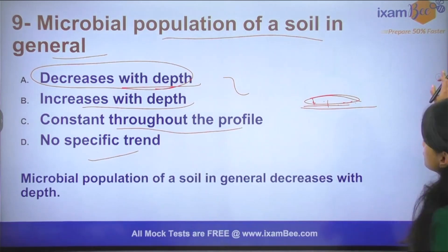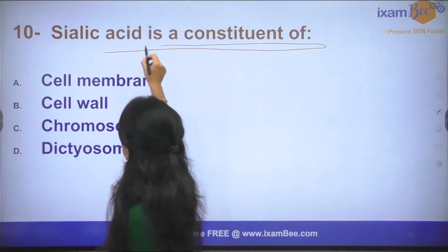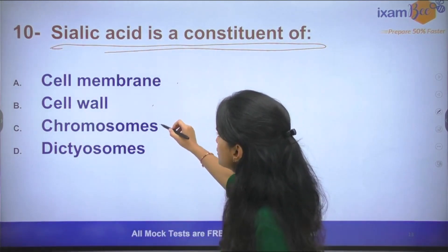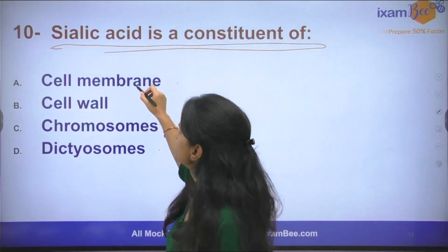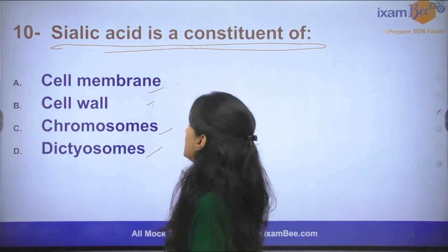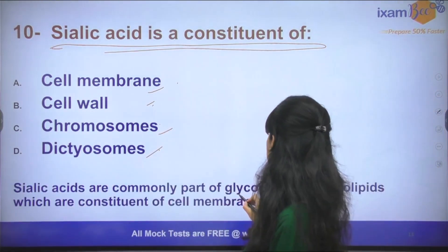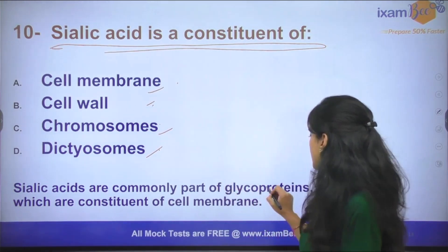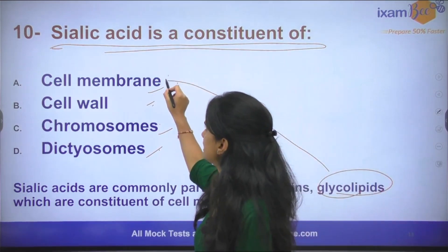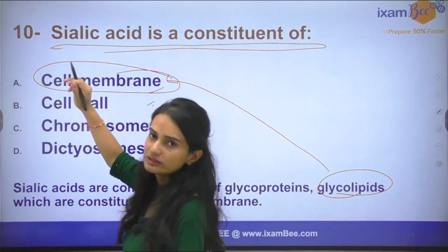The next question: Sialic acid is a constituent of which structure — cell membrane, cell wall, chromosome, or dictyosome? Sialic acid is actually a part of glycoproteins and glycolipids, and since glycolipids are in our cell membrane, sialic acid is a constituent of the cell membrane.